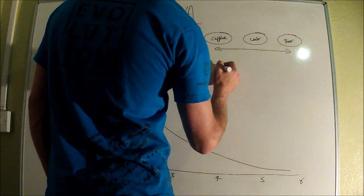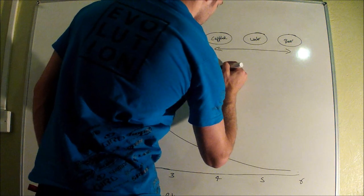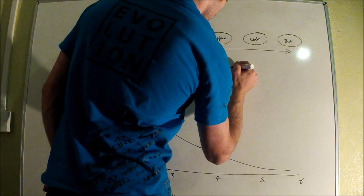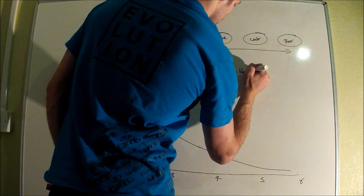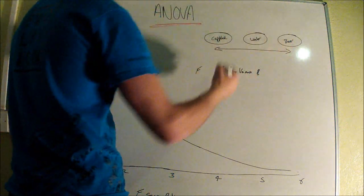It's calculated by using both our within groups variance—that's the variance within each group—and our between groups variance.